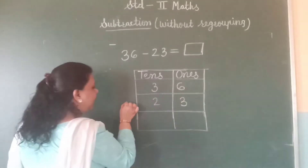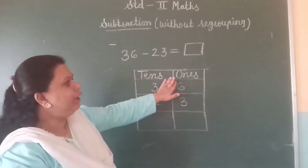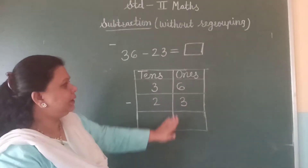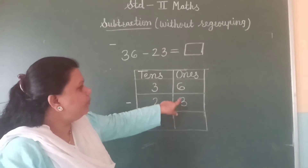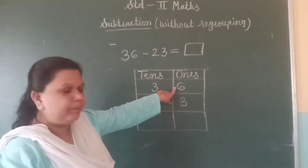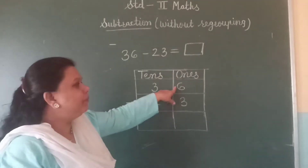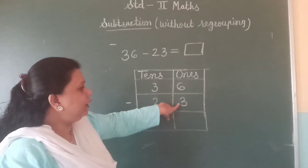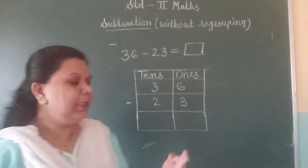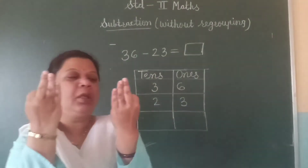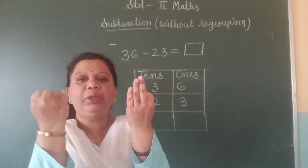Give your subtraction sign. First, we will subtract the ones place. We are supposed to subtract the lower number from the upper number. Here, three is the lower number and six is the upper number. So, let us subtract three from six. For this, take your six fingers. Minus you have three fingers — one, two, three.